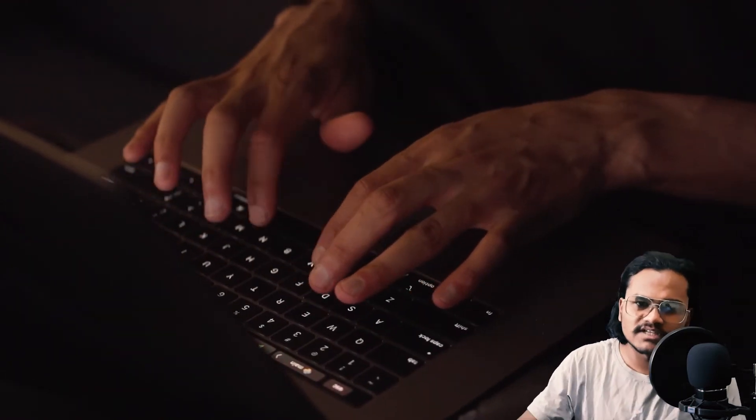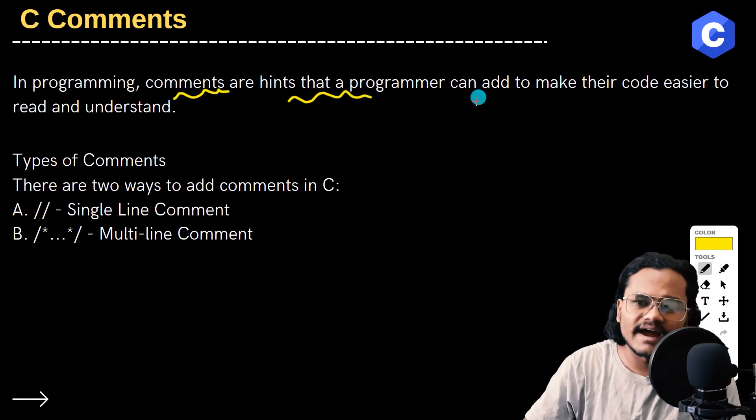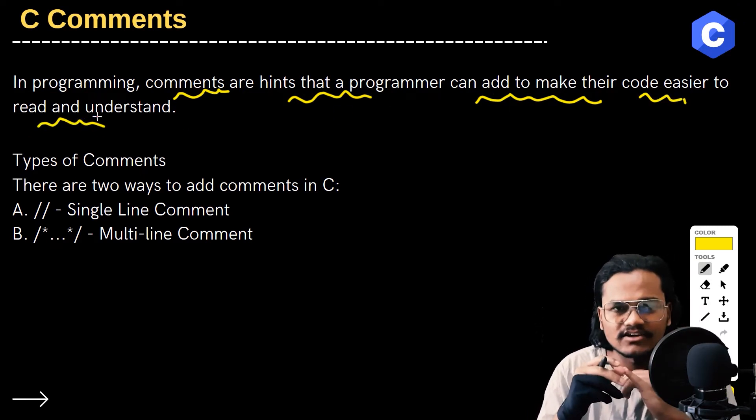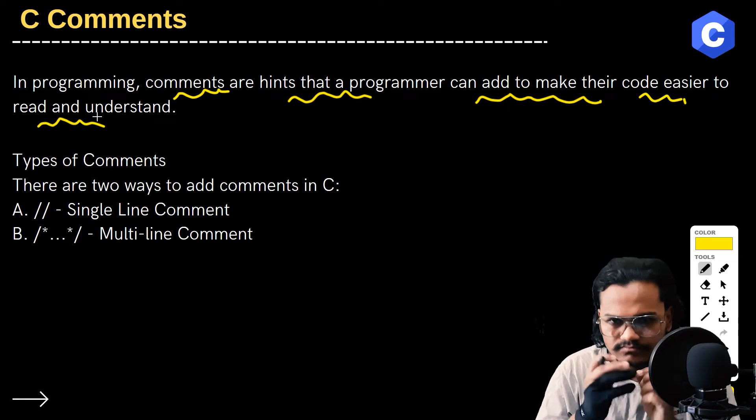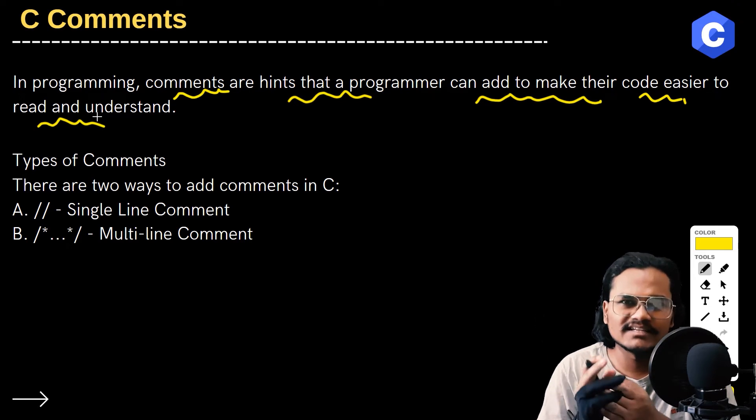Comments are added inside the program to make code easier to read and understand. Compilers ignore comments during execution, so they don't affect the program execution time.